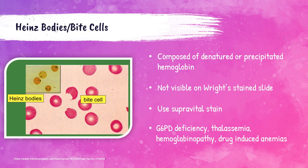This photo shows bite cells, which you would see on a Wright stain, and Heinz bodies, which you see on a supravital stain like new methylene blue. Heinz bodies are multiple inclusions caused by denatured hemoglobin, and these inclusions are invisible in a Wright stain, causing these bite cells — it looks like the cookie monster has taken a bite out of the red blood cell. If the blood sample is stained with new methylene blue, you would be able to see the actual inclusions of the denatured hemoglobin. These cells can occur in patients with G6PD deficiency, thalassemias, hemoglobinopathies, and drug-induced anemias.